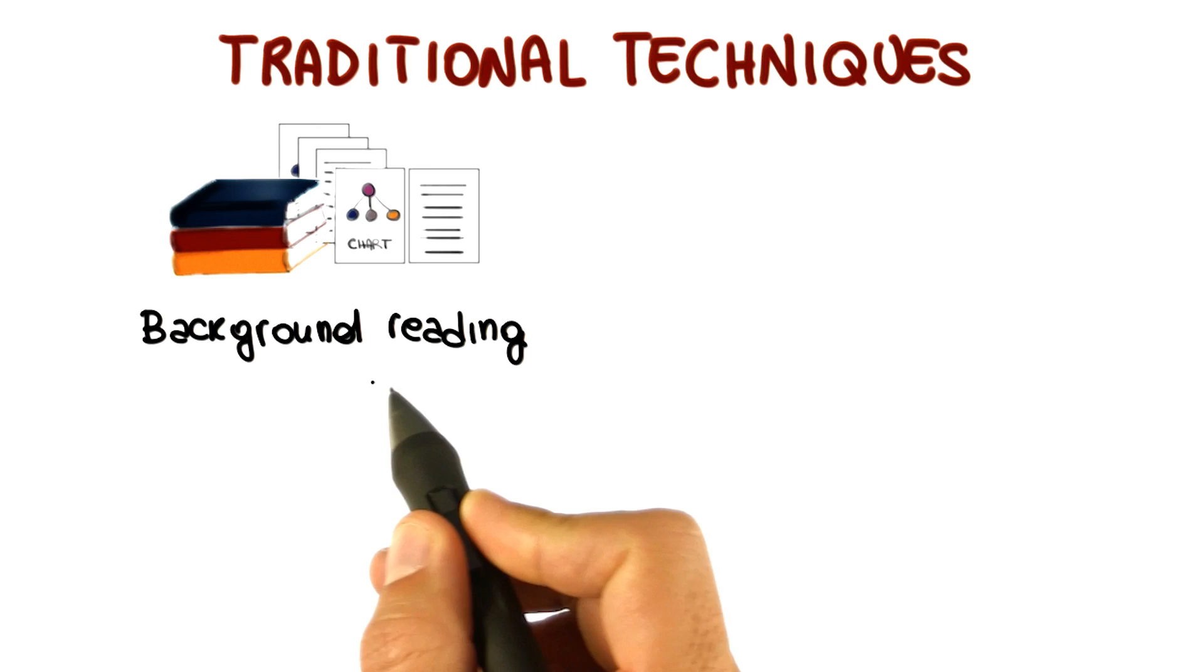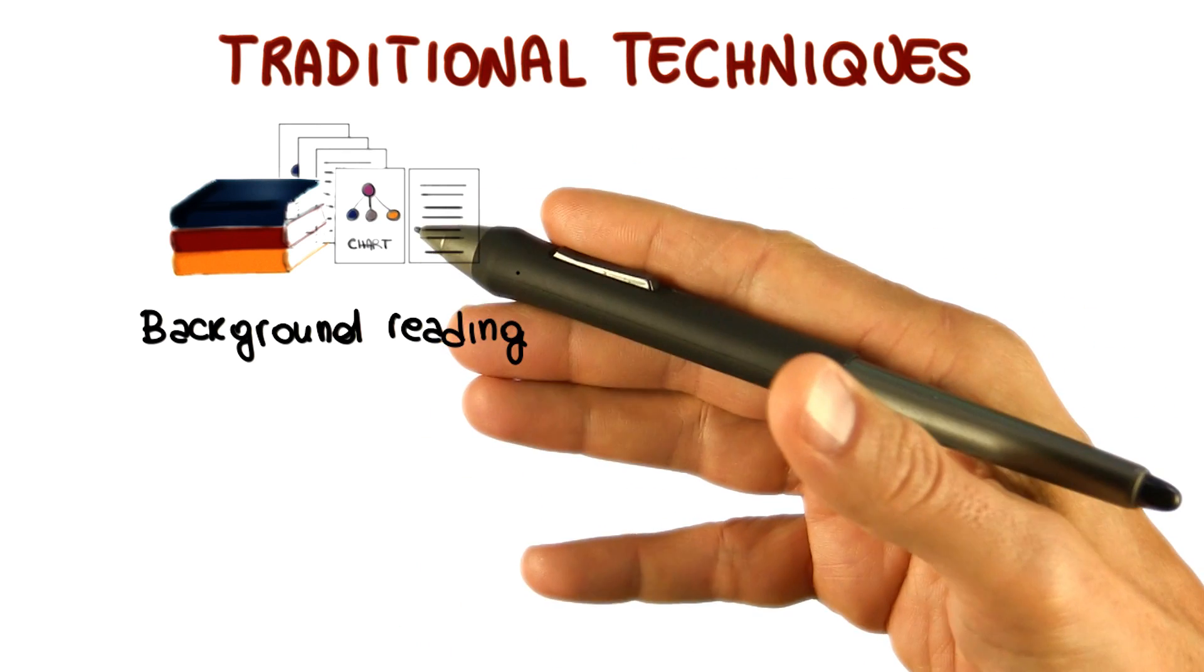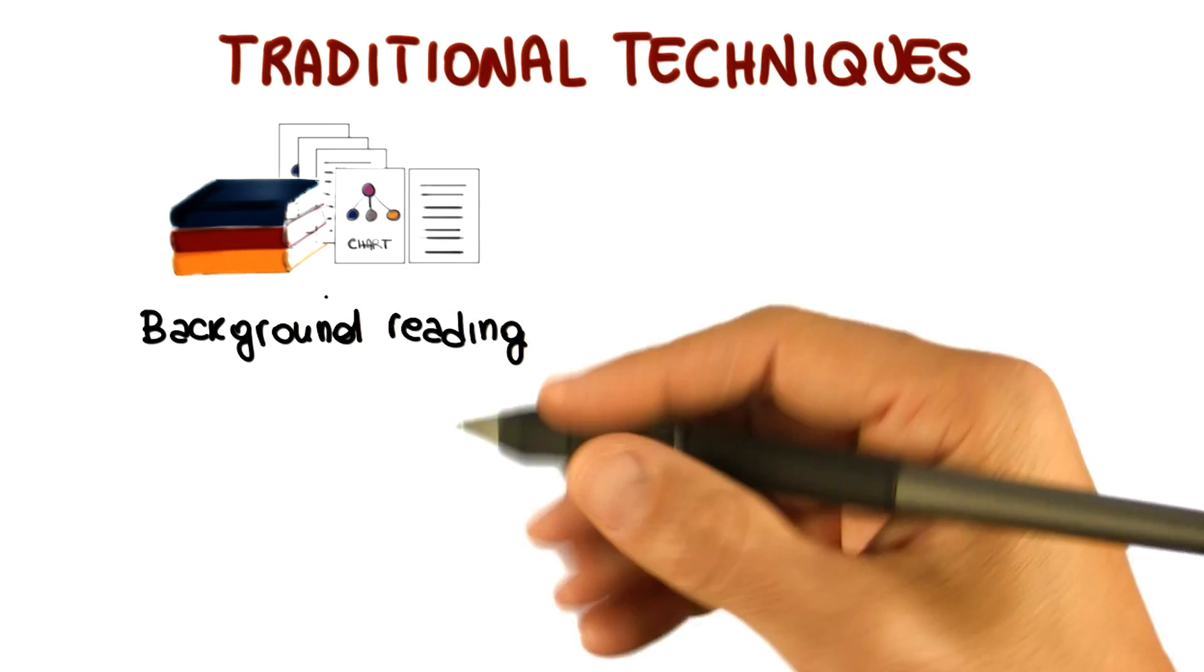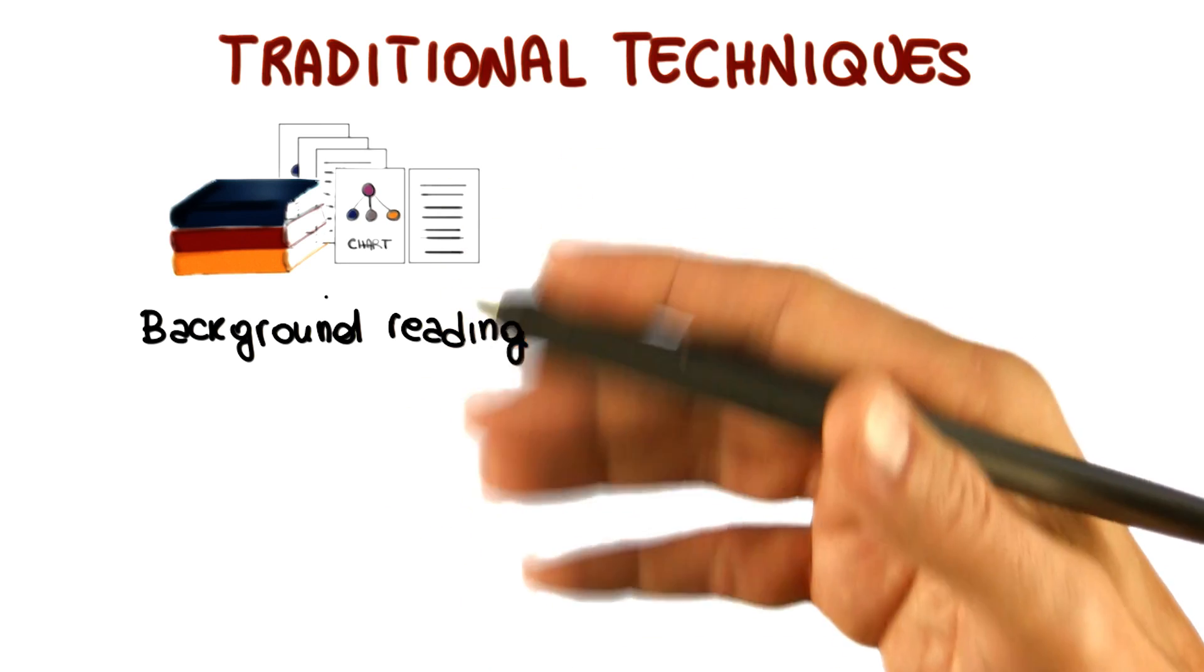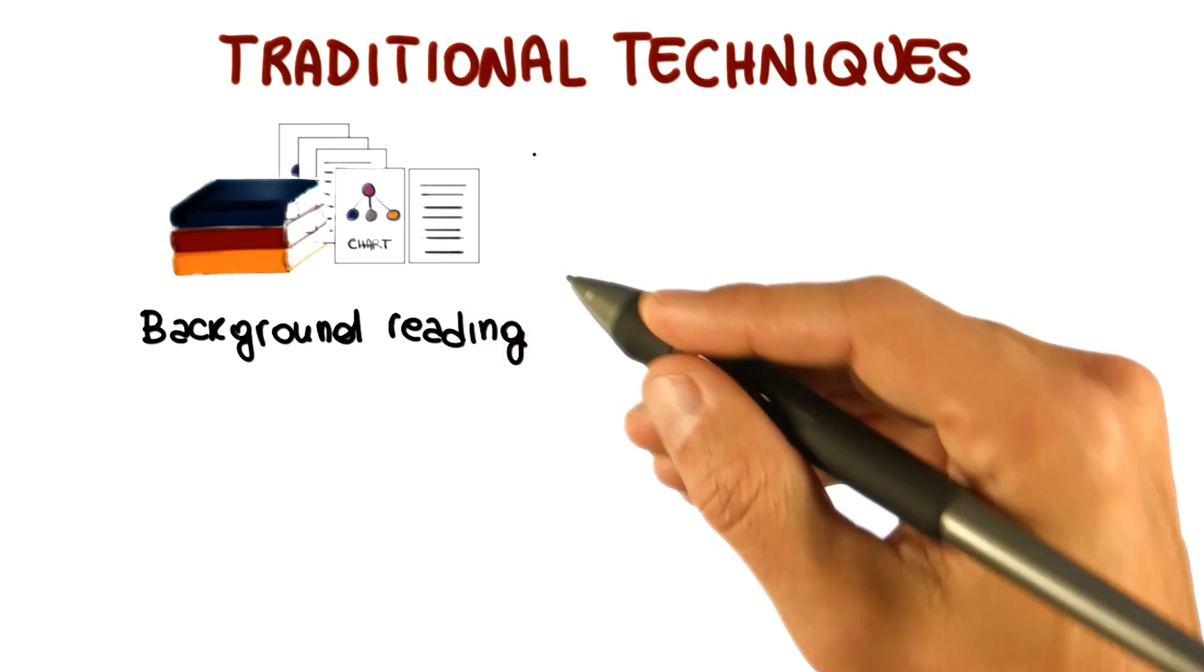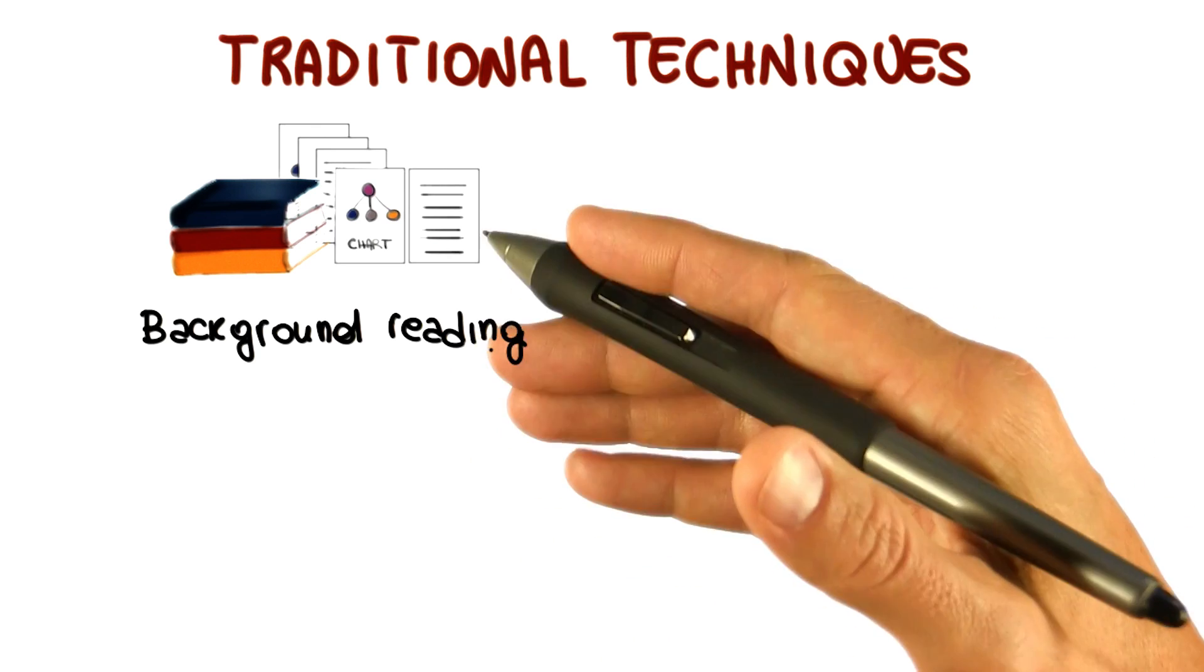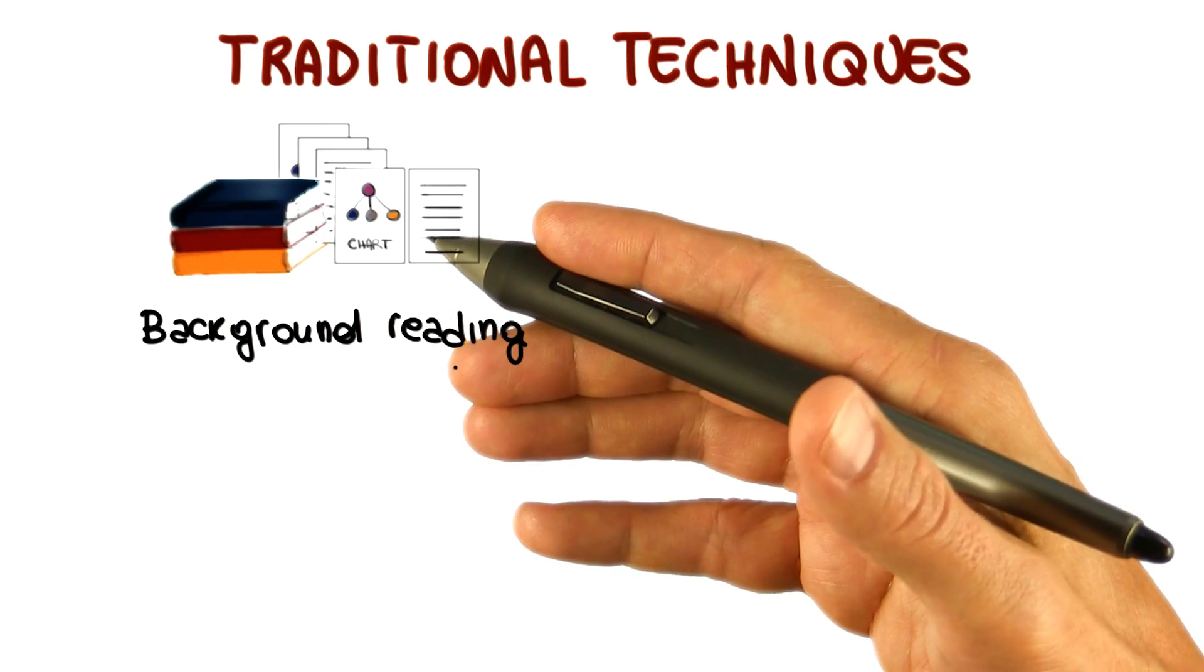The first technique is called background reading. This technique involves collecting information by reading existing documents such as company reports, organizational charts, policy manuals, job descriptions, documentation of existing systems, and so on. This technique is especially appropriate when one is not familiar with the organization for which the requirements are being collected, so you want to get some background before interviewing actual people.